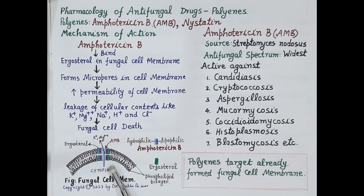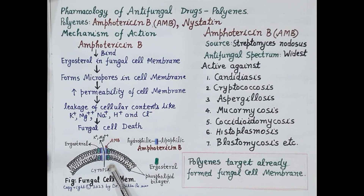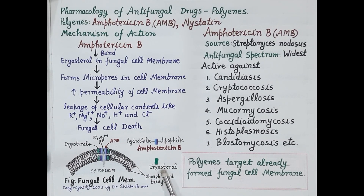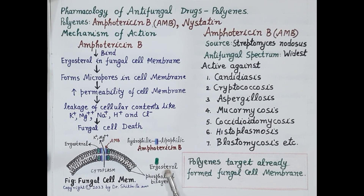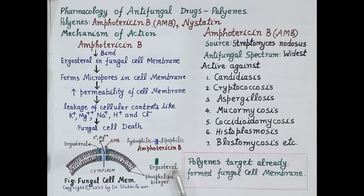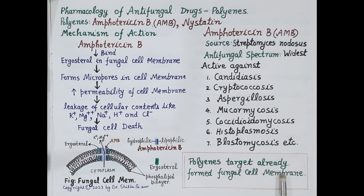Unlike polyenes, some other antifungal drugs belonging to the azoles and allylamine categories — for example, drugs like fluconazole and clotrimazole — inhibit the synthesis of ergosterol and thereby prevent the synthesis of new cell membrane. They do not target the already-formed cell membrane. This is a unique characteristic feature of polyenes.